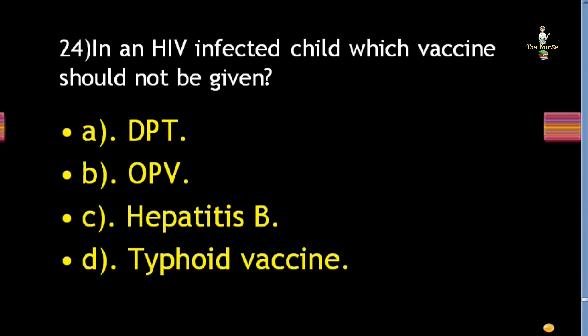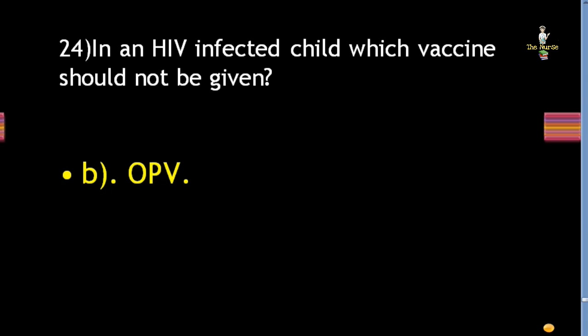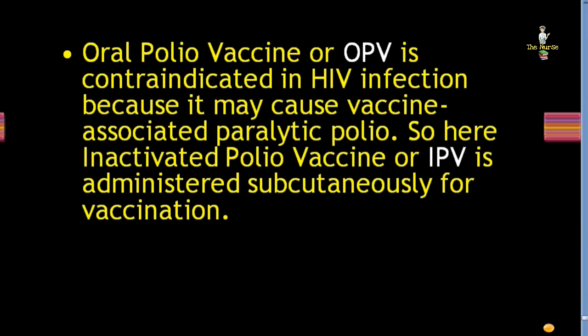Next question: in an HIV-infected child, which vaccine should not be given — DPT, OPV, hepatitis B, or typhoid vaccine? Correct answer is OPV. Oral polio vaccine is contraindicated in HIV infection because it may cause vaccine-associated paralytic polio. The inactivated polio vaccine (IPV) is administered subcutaneously for vaccination instead.